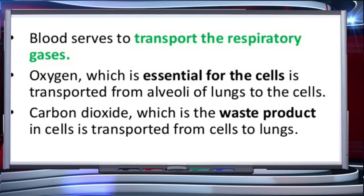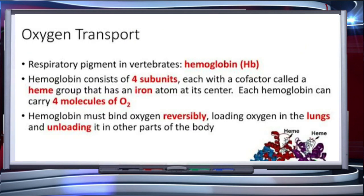About 97% of oxygen is transported by red blood cells in the blood. Hemoglobin is the respiratory pigment in vertebrates. Hemoglobin consists of four subunits, each with a cofactor called heme, a heme group that has an iron atom at its center. Each hemoglobin can carry four molecules of oxygen.